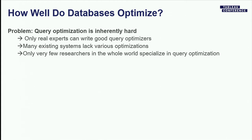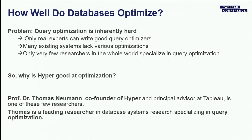Query optimization is inherently hard — computationally it's NP-complete, and it's also hard for humans to reason about. Therefore, only real experts can write good query optimizers, and many existing systems lack good optimizations. Very few researchers in the whole world specialize in query optimization because it's such a tough area. For Hyper, we're fortunate to have Professor Dr. Thomas Neumann, a co-founder of Hyper who wrote most of it. He's not only a strong theorist but also a very good coder, and he's one of the few people in the world specializing in this topic.